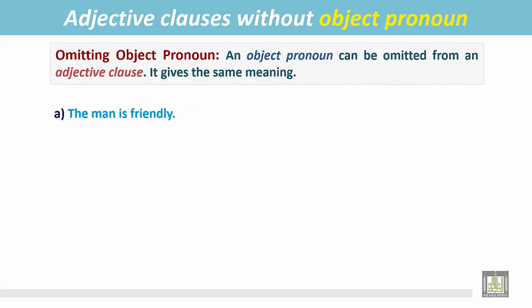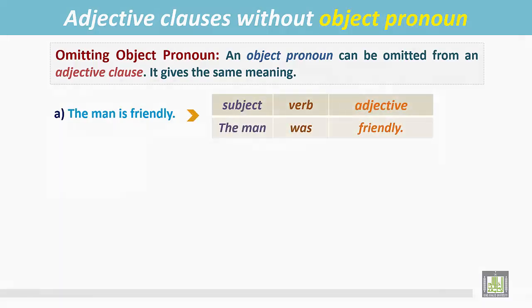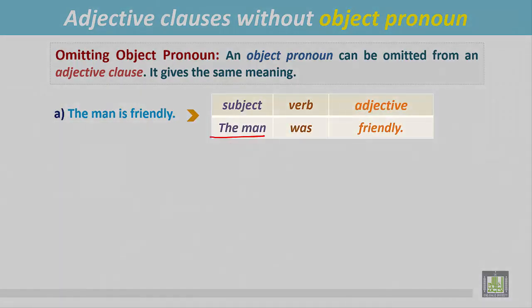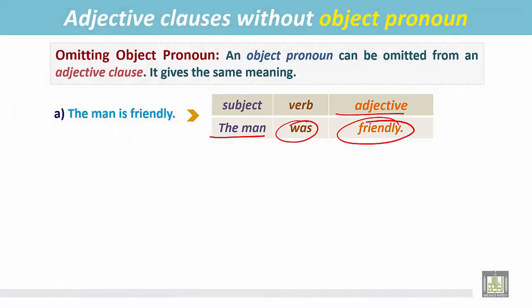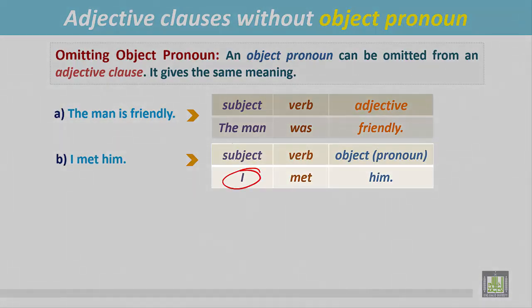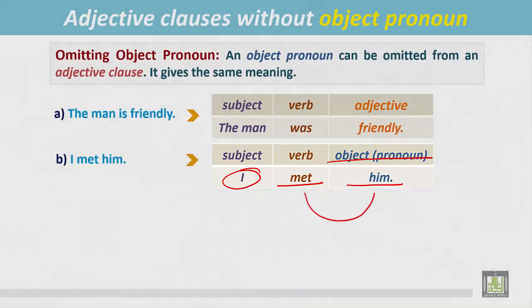The man was friendly. In this sentence, 'the man' is the subject, followed by the be verb 'was', and 'friendly' is the adjective. Another sentence: I met him. In this sentence, 'I' is the subject, 'met' is the transitive verb, and 'him' is the object pronoun and the object for this verb.